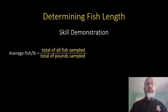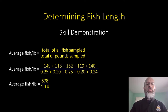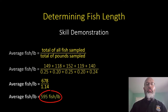The next step is to plug this into our equation. The equation is: average fish per pound equals the total of all fish sampled divided by the total pounds sampled. Plugging our numbers in, we get 678 total fish sampled divided by a total weight of 1.14 pounds. When you run this through the calculator, you get 595 fish per pound.